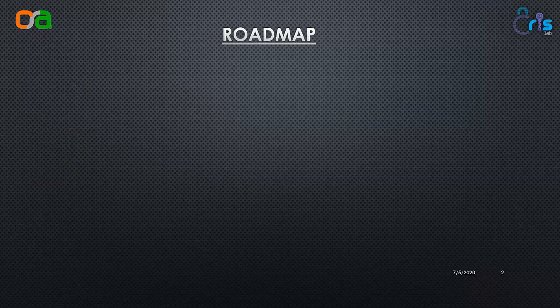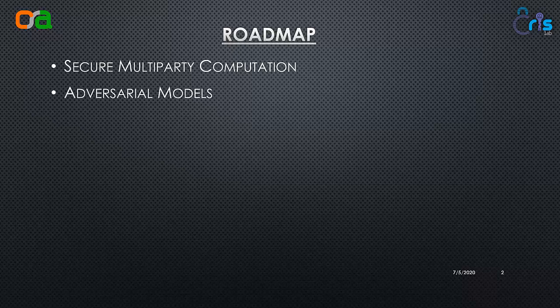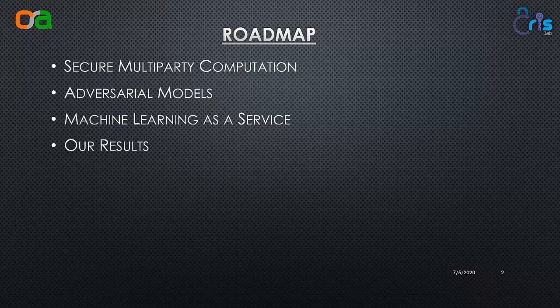I will be taking the roadmap as follows. First I will talk about what secure multiparty computation means, then about the different adversaries we tackle, then digress a little and talk about what machine learning as a service generally means, and then combining these three things I will come to our results.